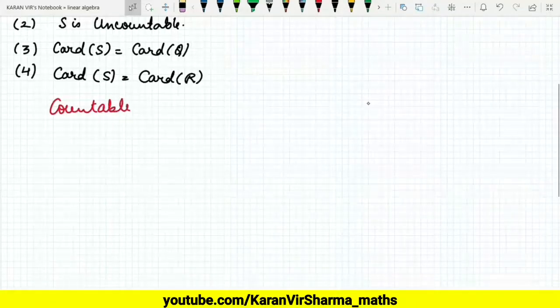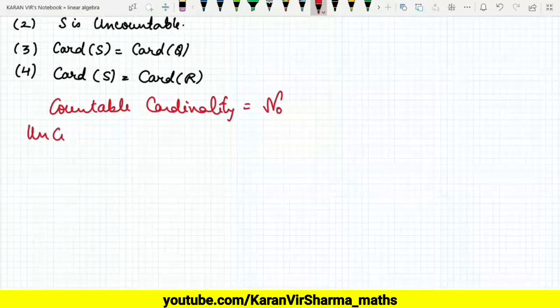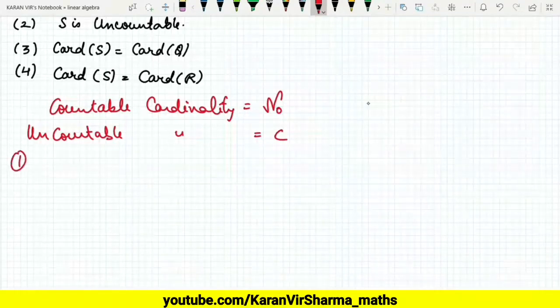The cardinality of uncountable is always denoted by continuum. Now the results: first one is aleph-naught is strictly less than continuum. Second, 2 raised to power aleph-naught is nothing but continuum.